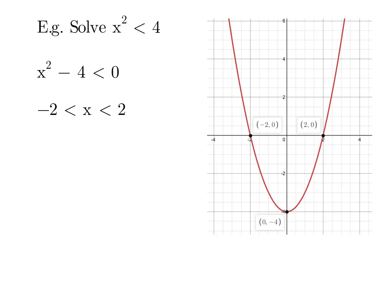So firstly we're going to subtract the 4 across, making it less than 0, which makes it a parabola. And then from our previous videos that we've watched, if we want where it's less than 0, so where are the y values less than 0...